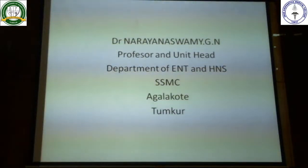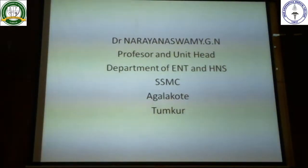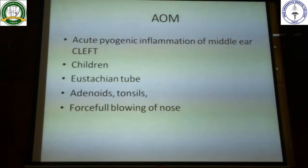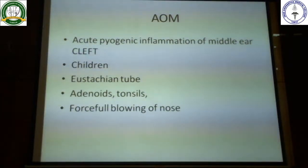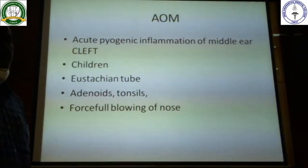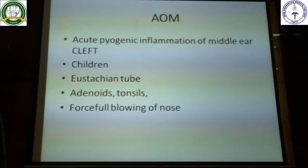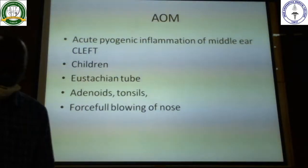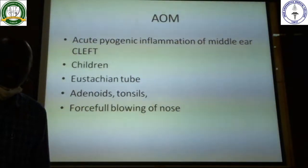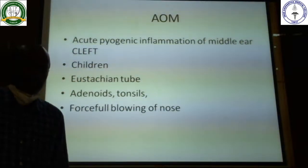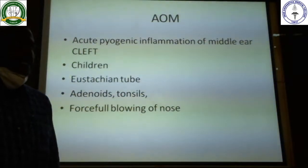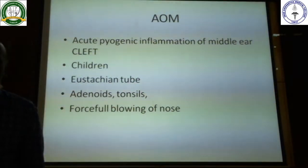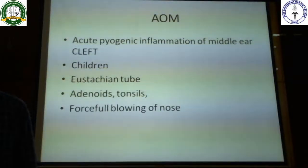To start with, AOM — as you know, AOM is Acute Otitis Media. Acute otitis media is inflammation of the middle ear of short duration. There is one more entity called chronic otitis media, which we'll come to later. The definition of acute otitis media is acute pyogenic inflammation of the middle ear cleft. It is not just limited to the middle ear.